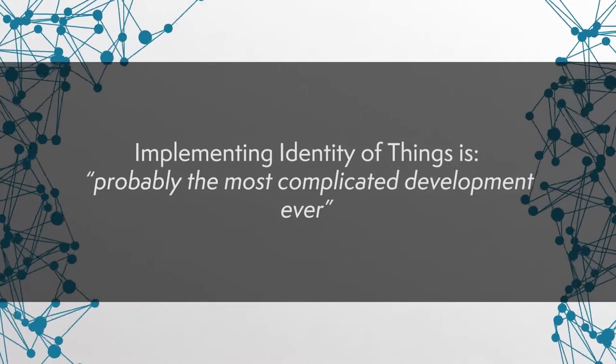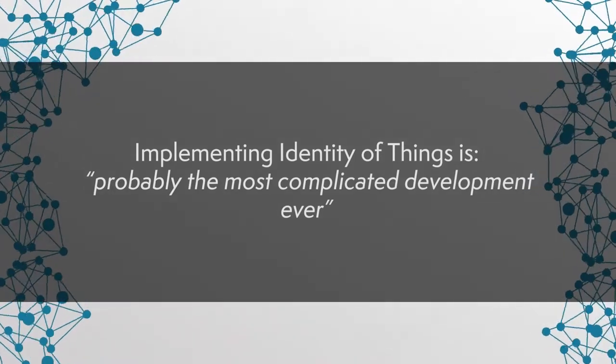IOTA also recognizes that each IoT device needs to have a unique, immutable, and tamper-proof identity information tag. Dominic Scheiner, the co-founder of the IOTA Foundation, recognizes the necessity for IOTA to handle identity tags as well as additional information including manufacturers, lifecycle, and whether it collects and sells data. At the same time, Dominic went on record saying that implementing identity of things is probably the most complicated development ever. When it comes to the Internet of Things, IOTA has already entered into a strategic partnership with household appliance giant Bosch.